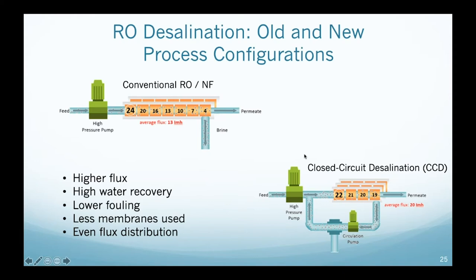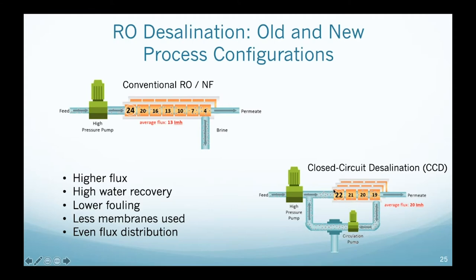The closed-circuit desalination mode allows operation at higher fluxes, higher water recovery, lower fouling and scaling, fewer membranes compared to conventional, and even distribution of flux across all membranes. The raw produced water has TDS of around 15,000 mg/L and DOC of around 400 mg/L.